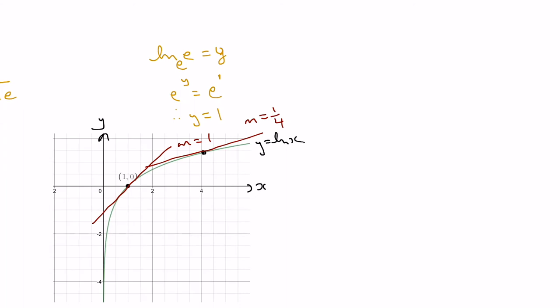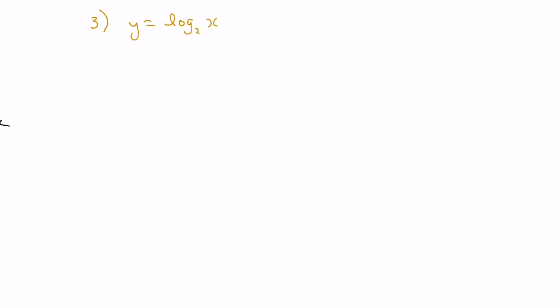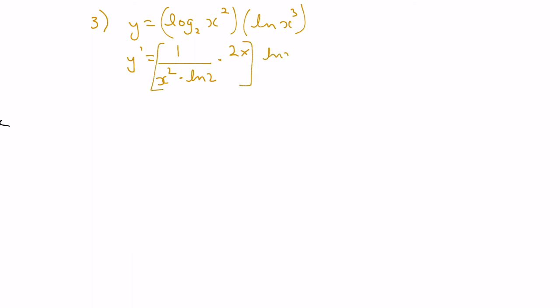Let's finish with a final example. What if we wanted to find the derivative of log base 2 of x squared times the natural logarithm of x cubed? Using the product rule, the derivative is the derivative of the first function — 1 over x squared times ln 2, times the derivative of x squared which is 2x — multiplied by the second function ln x cubed, plus the first function log base 2 of x squared times the derivative of the second function, which is 1 over x cubed times 3x squared.